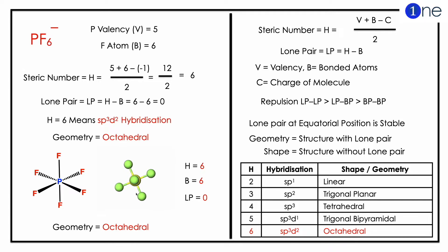H equals 6 means sp3d2 hybridization, which is octahedral shape. P is in the center, 6 fluorine on the axial positions, so you have octahedral geometry.